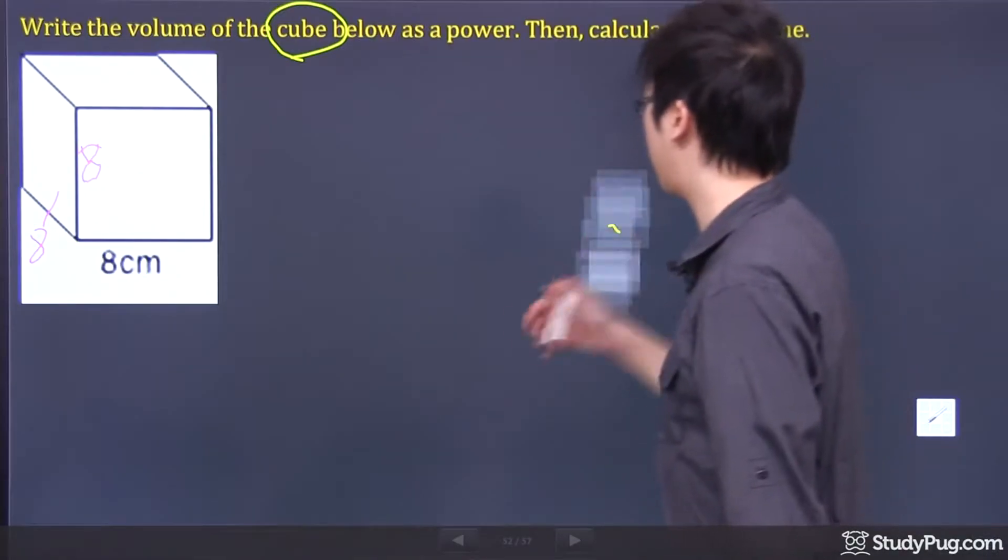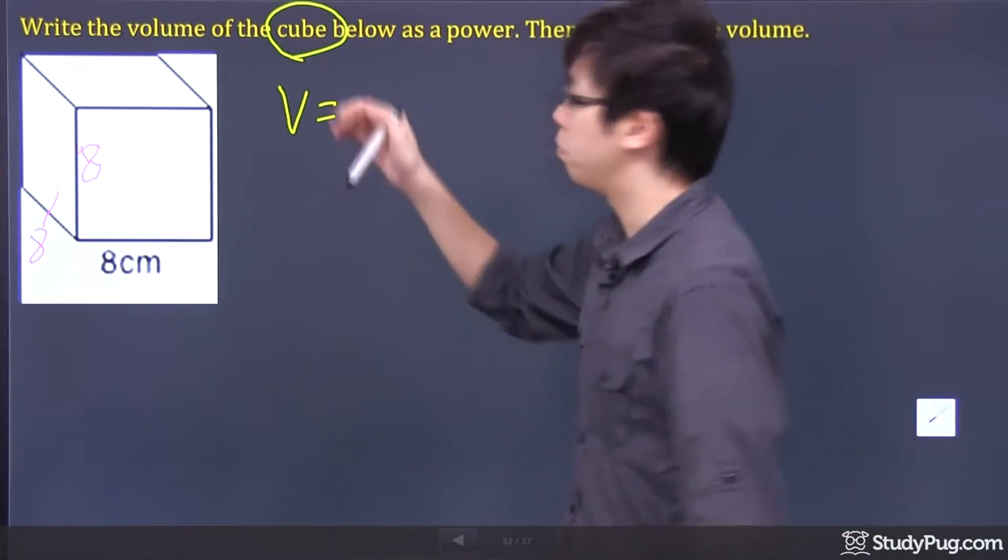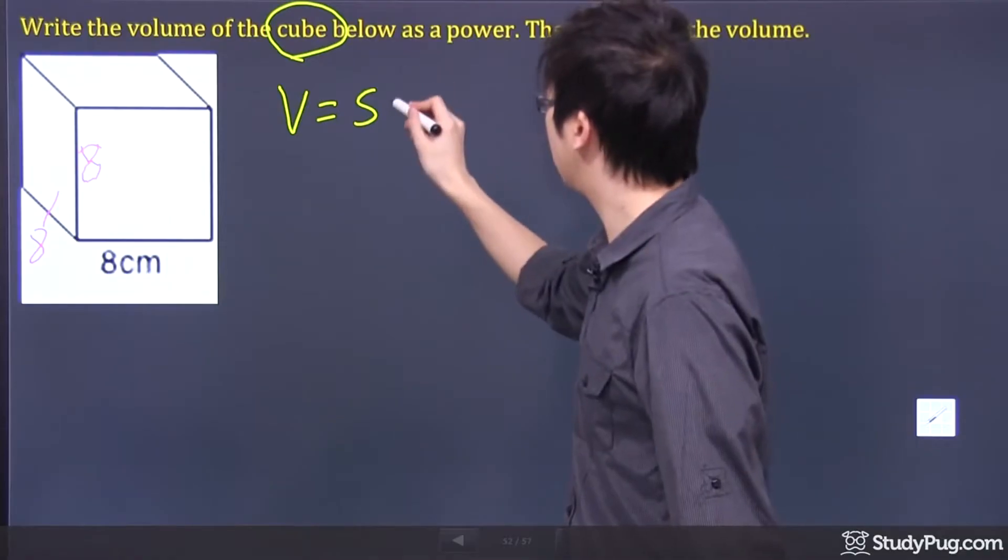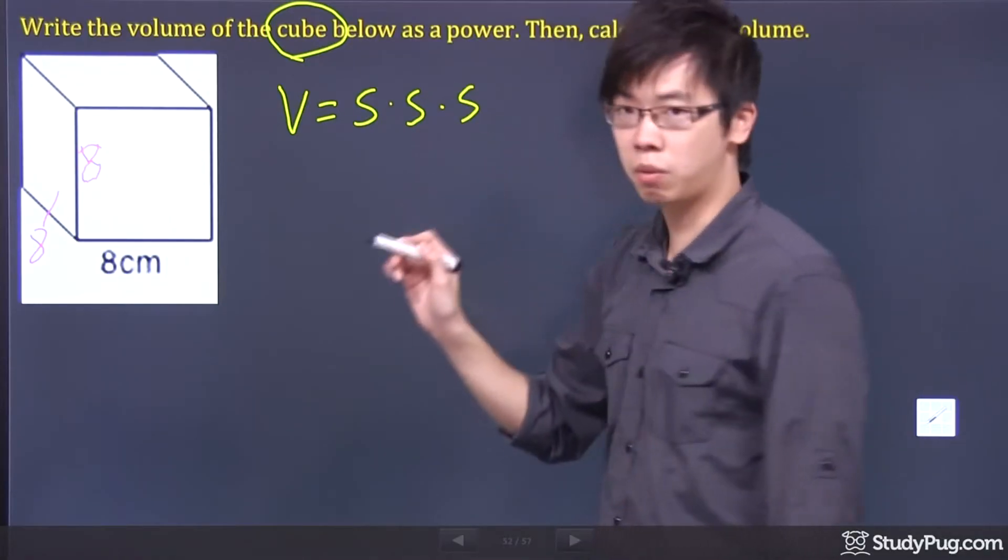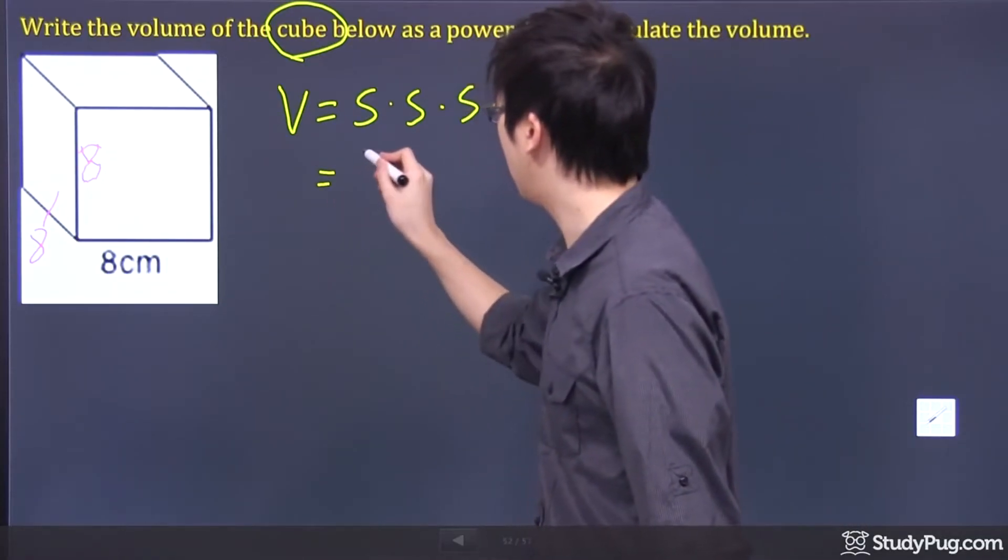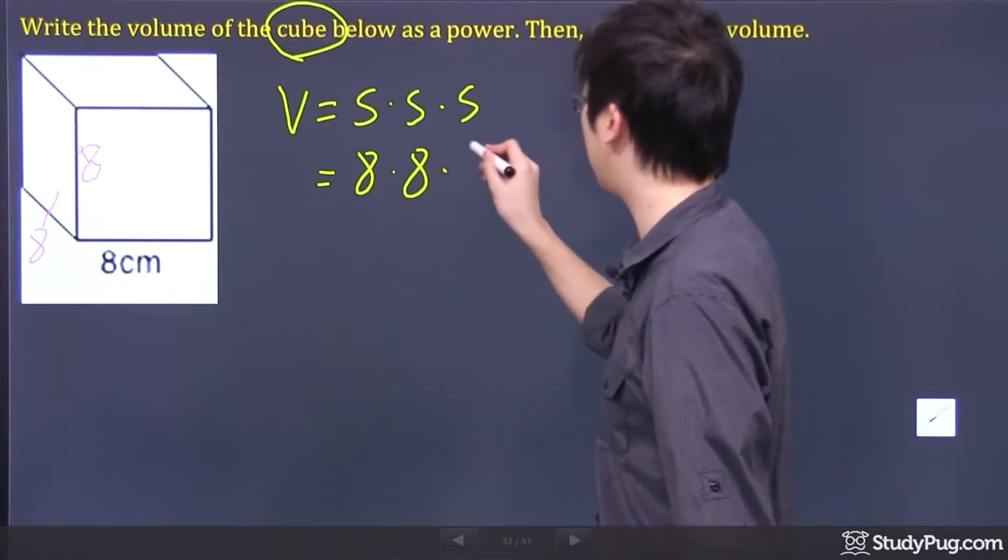So if I wanted to figure out the volume for this one, because it's a cube, it would be this side times the side times the side. And I know it's going to be 8 times 8 times 8.